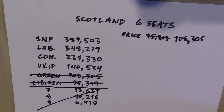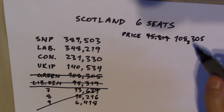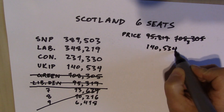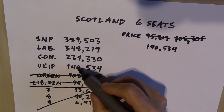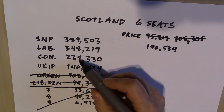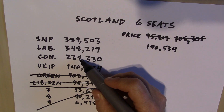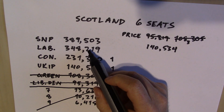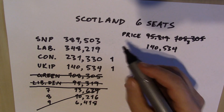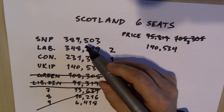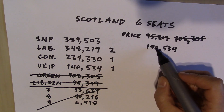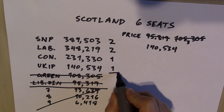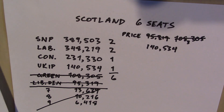So now in last place among the remaining contenders is UKIP with 140,534 votes. What happens if we say the price of a seat is 140,534? UKIP will get one seat. Conservatives have more than UKIP but less than double UKIP, so they get one seat. Labour has more than double but less than triple UKIP, so they get two seats. The Scottish National Party is also more than double but less than triple, so they get two seats also. In total that awards six seats — and we are done, at least for Scotland.